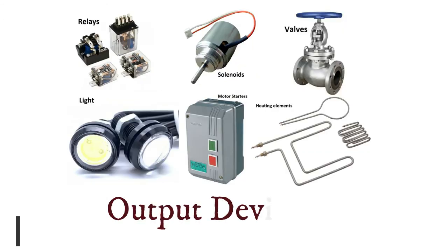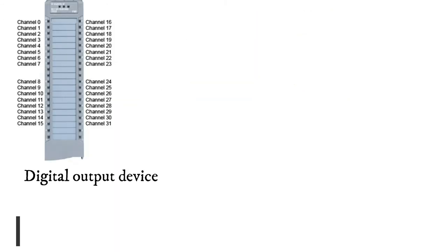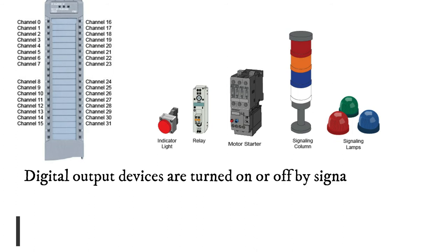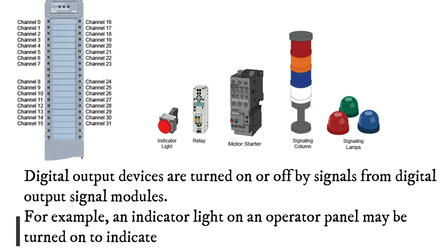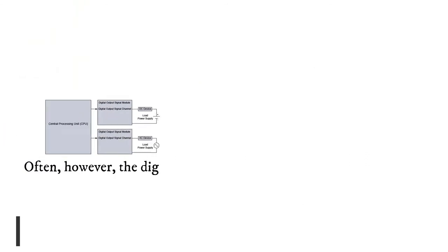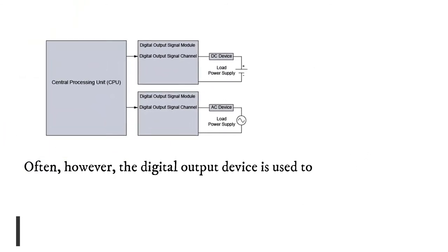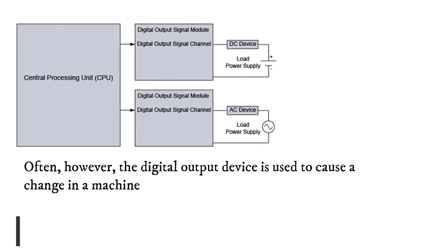Digital output devices are turned on or off by signals from digital output signal modules. For example, an indicator light on an operator panel may be turned on to indicate that a machine is running. Often, however, the digital output device is used to cause a change in a machine or process, such as starting or stopping a motor or pump.